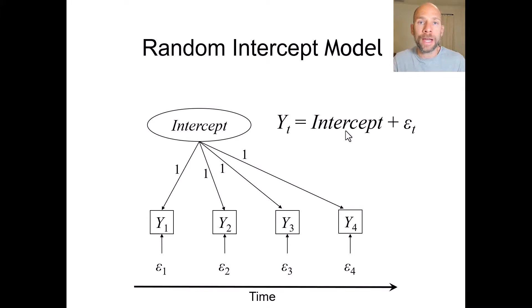For example, this model would imply that true intelligence scores stay the same for a given person. And that if we find differences in observed IQ test scores, then those differences would only be explained by a measurement error component that sometimes makes people score higher and sometimes makes people score lower on that IQ test. So it's a very simple model for longitudinal data and a good baseline model to test the hypothesis of no change in true scores across time.